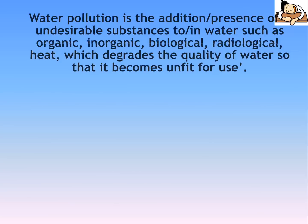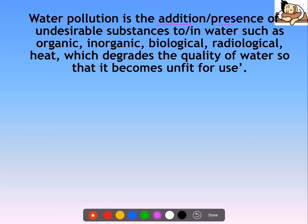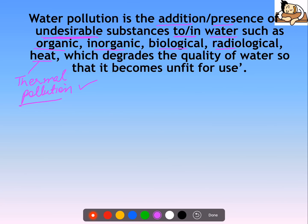Water pollution is the addition or presence of undesirable substances in water, such as organic, inorganic, biological, radiological, and heat. Heat also causes thermal pollution, which is very important. When industries discharge warm water, it causes thermal pollution, and aquatic organisms are affected, which degrades the quality of water so that it becomes unfit for use.